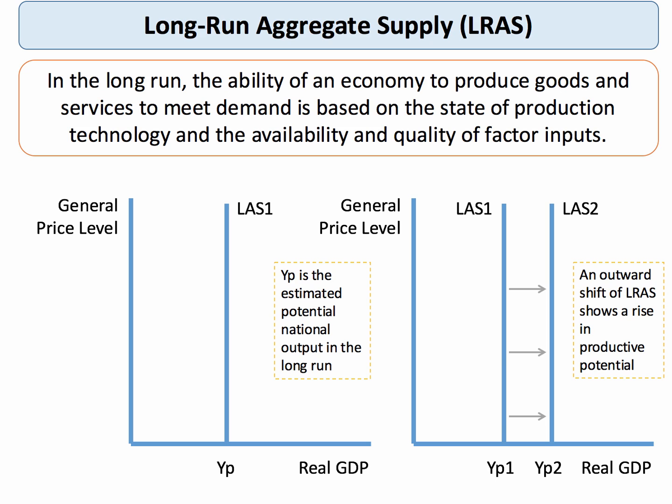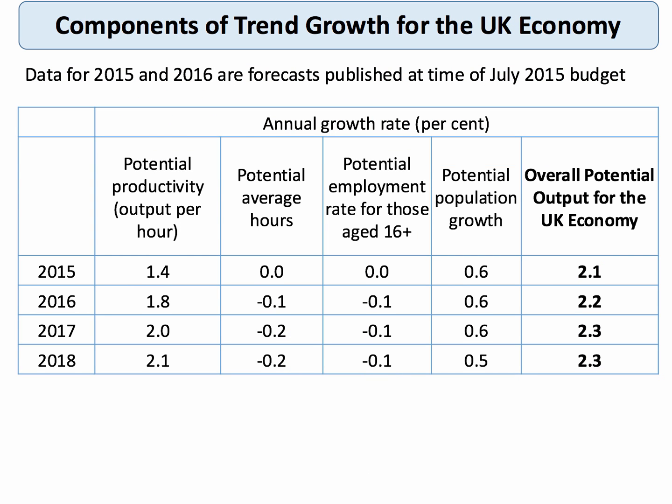When you focus on supply-side policies, you're hoping to find policies which are effective in causing this kind of shift. Looking at some data for the UK, this information shows the annual growth rate of the components of trend growth. Trend growth is the estimated rate of growth of a nation's productive potential, and the data shows that productivity growth is the main driver of potential output over the long run.